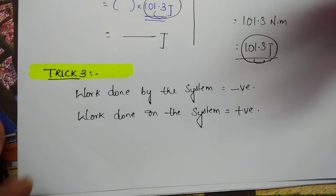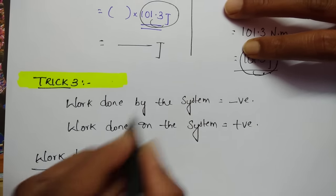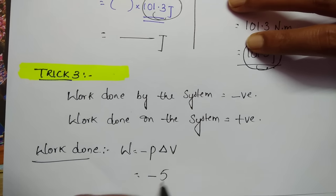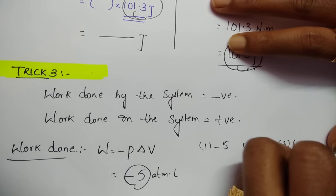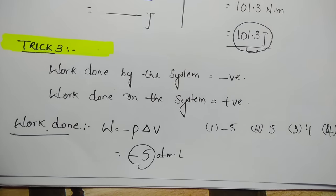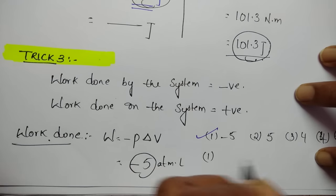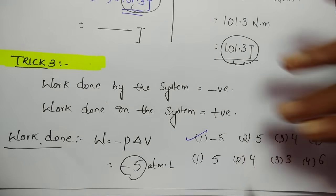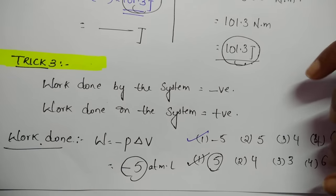When solving a question where only 'find work done' is asked, if you get an answer of, say, -5 ATM·liter, and the options include -5 and +5, mark -5. But if options are given without signs (like just 5, 4, 6), then mark 5 — the magnitude. If the question itself says 'work done by the system,' you do not need to add a negative sign again; just mark the magnitude. This is a point where many students get confused.